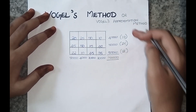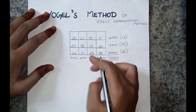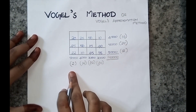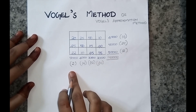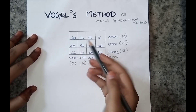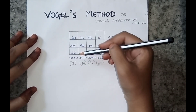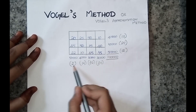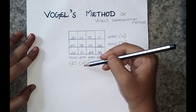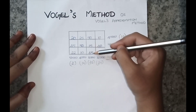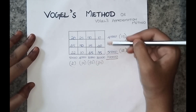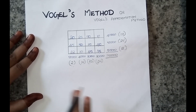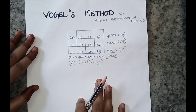Now do the same step for all four columns. Column 1: the first smallest is 20, second smallest is 22, so 22 minus 20 equals 2. Column 2: 25 minus 10 equals 15. Column 3: 45 minus 15 equals 30. Column 4: 35 minus 10 equals 25. We are done with the first step.